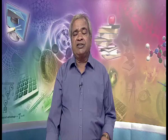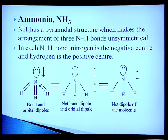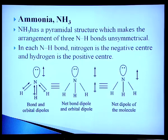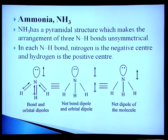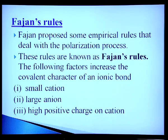A most interesting example is ammonia. NH₃ has a pyramidal structure, making the arrangement of the three N–H bonds unsymmetrical. In each N–H bond, nitrogen is the negative center and hydrogen is the positive center. Since ammonia has one lone pair of electrons, the dipole from the lone pair adds to the resultant of the three bond dipoles. Therefore, NH₃ shows a net dipole moment. Fajan proposed empirical rules — Fajan's rules — dealing with the polarization process: a small cation, large anion, and high positive charge on the cation increase covalent character of an ionic bond.